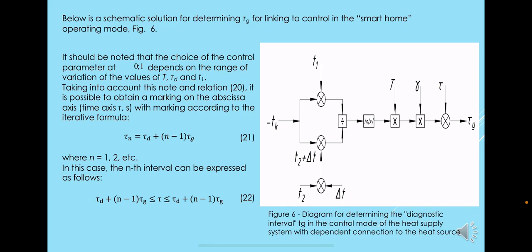Such a period can be called a discretization interval and denoted as t by g. The t by g value can be determined based on 23 according to the formula.